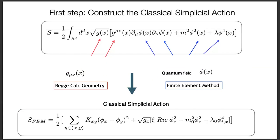We now have a problem with two kinds of fields. The metric tensor is the field of general relativity — its gauge field. It's related to the curvature tensor. We have to worry about geometry at this level, then put the field on it and see if everything fits together.